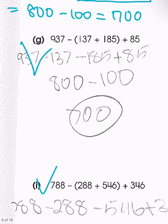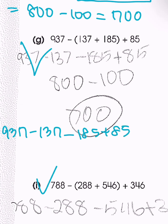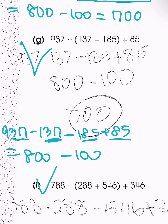Then we have problem G. Distributing the negative sign, we have 3737 and 8585 patterns. 937 minus 137 is 800. Negative 185 plus 85 is negative 100. So that also gives us 700.